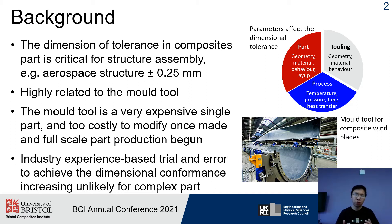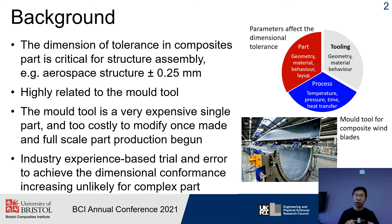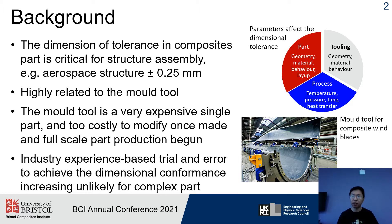The starting point of the research is based on the fact that dimensional tolerance in complex parts is critical for structural assembly — for aerospace it can be as tight as 0.25 mm. When we look at the parameters that affect dimensional tolerance, tooling accounts for a large part. On the other hand, the mould is a very expensive single part and too costly to modify once made and full-scale part production has begun. Also, with the increased size and complexity of parts we want to manufacture nowadays, traditional industrial experience-based trial-and-error methods become increasingly unviable.